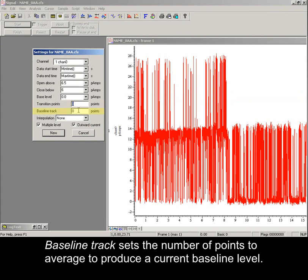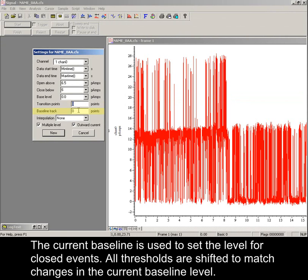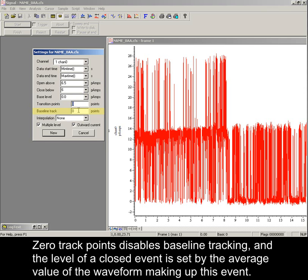Baseline track sets the number of points to average to produce a current baseline level. The current baseline is used to set the level for closed events. All thresholds are shifted to match changes in the current baseline level. Zero disables baseline tracking, in which case the level of a closed event is set by the average value of the waveform making up this event.